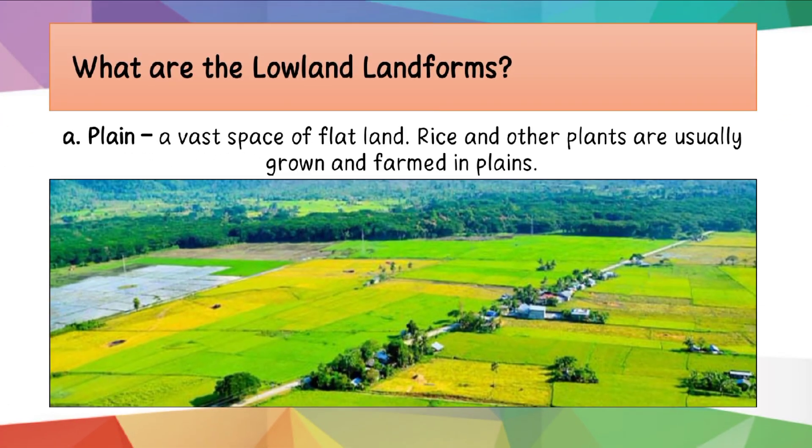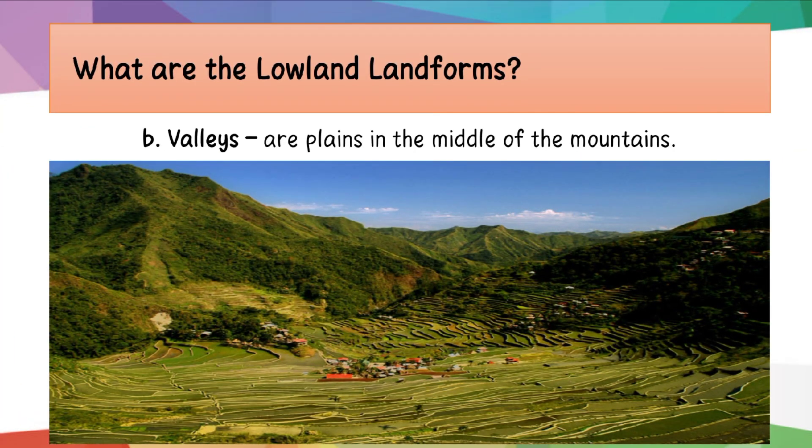What are the lowland landforms? First, we have the plain — a vast space of flat land. Rice and other plants are usually grown and farmed in plains. Here is a picture of a plain. Next we have valleys. Valleys are plains in the middle of the mountains. Here is a picture of valleys.